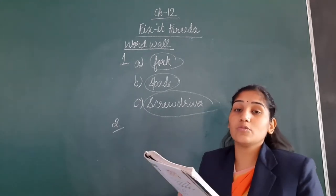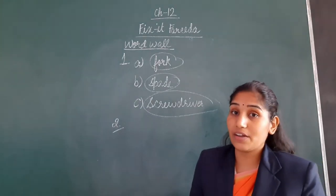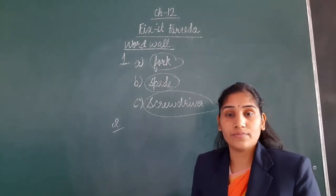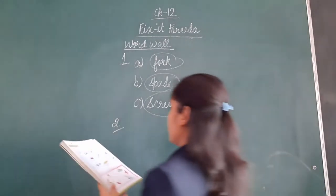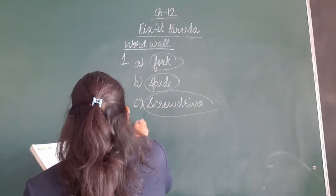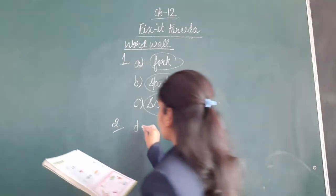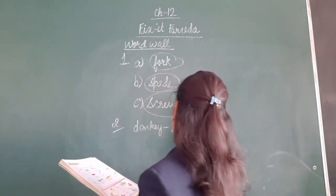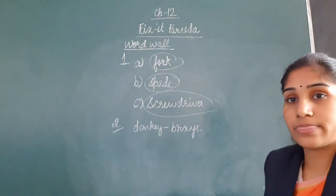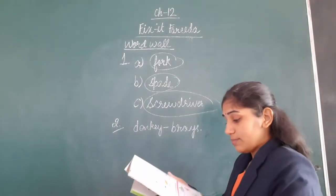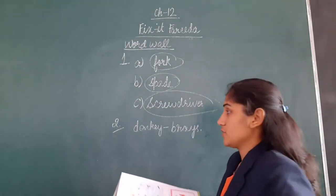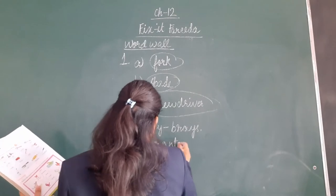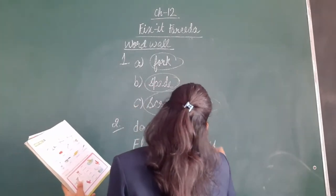The first sound given to us is 'brays', B-R-A-Y-S. Which animal makes this sound? Yes, a donkey brays. So we will write: donkey brays. Here you will match it in your book. Now we will come to the 2nd part: trumpets. So an elephant trumpets.